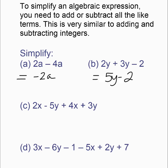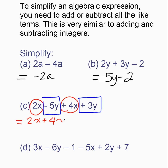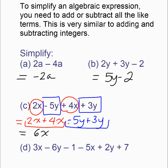One thing that is really helpful is to use different colors or different symbols to collect like terms. For example, put circles around the x's and squares around the y's. Then put your x's together and your y's together, and take very careful care that you include the sign. That negative sign belongs with the 5y, so include your sign. Then simplify.